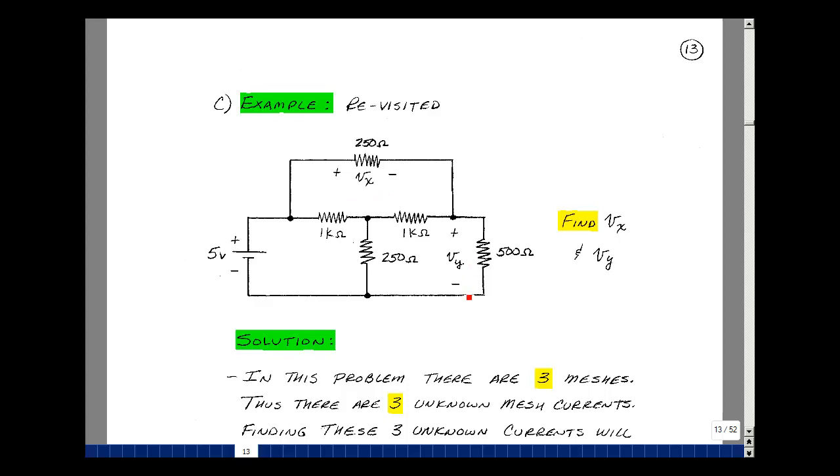Now in this problem, there are three meshes. Here's a mesh, here's a mesh, and here's a mesh. If we find these three unknown mesh currents, we can find any other voltage or current in the circuit. In particular, we want to solve for V sub x, and that's going to be this mesh current times 250 ohms. Likewise, V sub y is going to be this mesh current times 500 ohms. This time we'll do a four-step algorithm to solve for the unknown mesh currents, or the ones that we need.